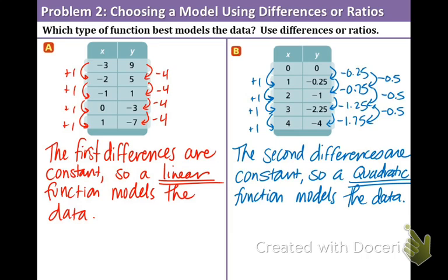There you have it. You see a linear model, you see a quadratic model. A model for exponential will be pretty similar to part A except instead of adding or subtracting by the same number for the y values you'd be multiplying. Let's move on to our last example.